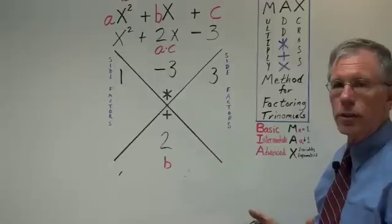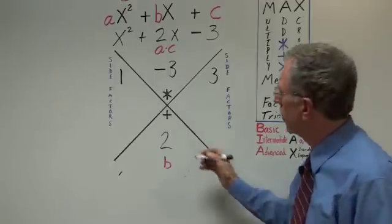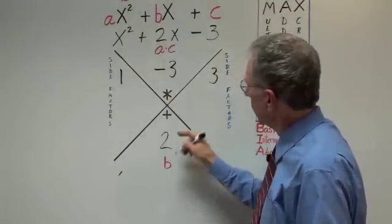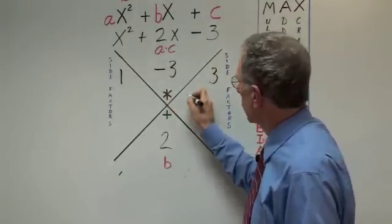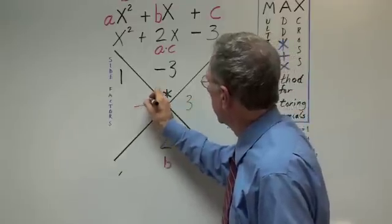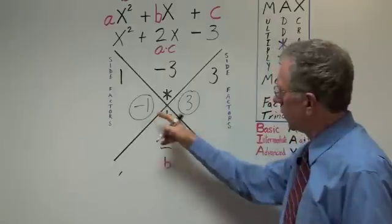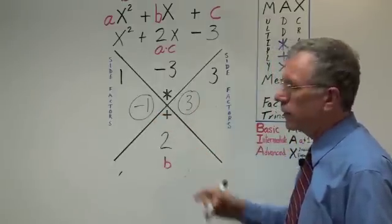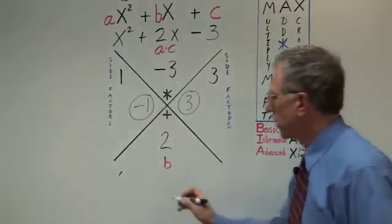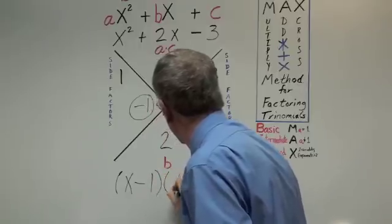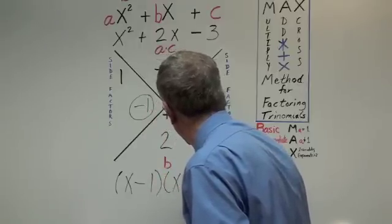Well, it only takes a moment to realize what should be negative. Over here, if we make negative 3, this would have to be a negative number. So we just leave 3 as it is and make it negative 1. That's our two factors. Negative 1 plus 3 is 2. We can go right to our answer. x minus 1 times x plus 3.